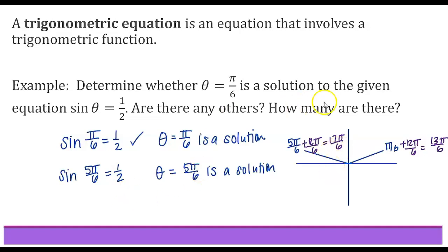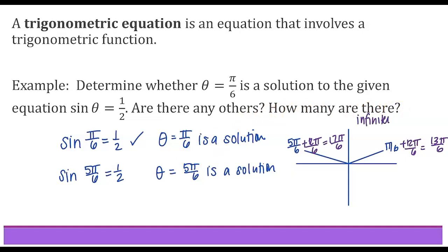So just to recap: yes, pi over 6 is a solution. Are there any others? Yes — on 0 to 2 pi there's also 5 pi over 6. But in general there are infinitely many solutions.